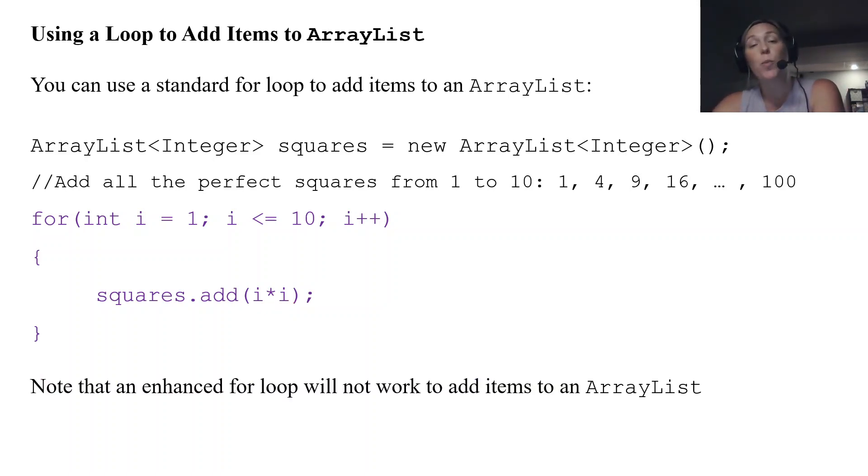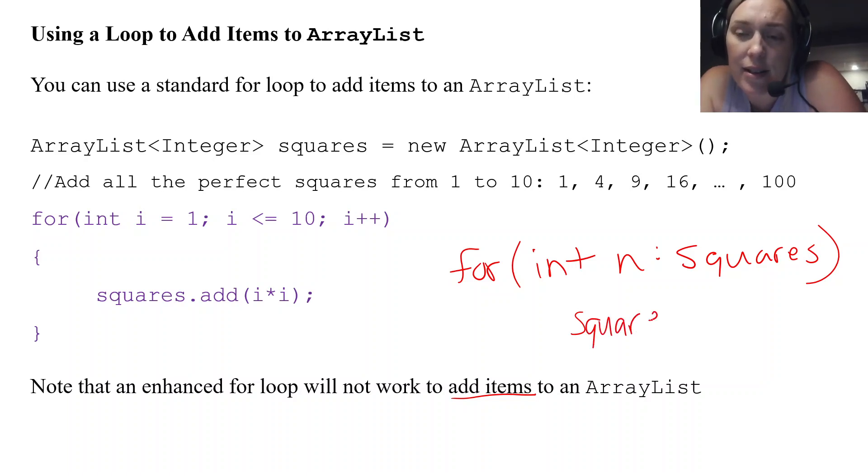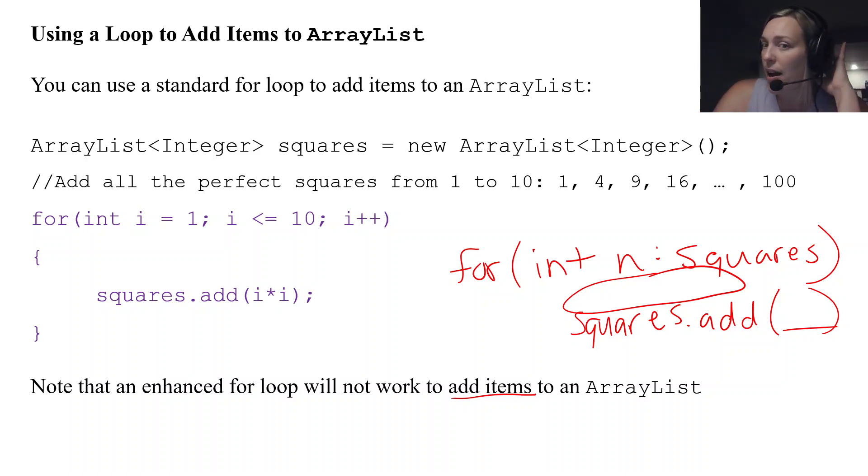I want you to note that an enhanced for loop will not work to add items to an ArrayList. Why is that? Well, when we add items, our ArrayList is changing, right? If we add items, our ArrayList is growing. And when I use a for each loop in squares, let's say I were to try to add an item here. One, let's say, what would I add? Squares.add. If I wanted to add a value, I could probably introduce another variable that controls, you know, kind of like the for loop header, a variable that controls what squares are added.